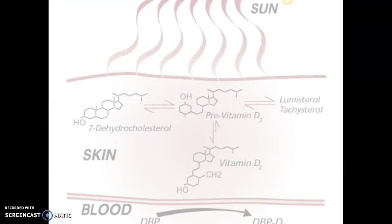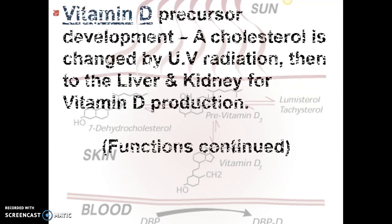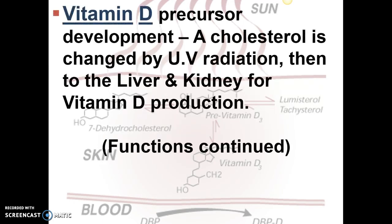This diagram shows how sunlight — the ultraviolet B rays — changes a precursor in our skin from cholesterol to form vitamin D, with the help of your liver and your kidney. The vitamin D precursor is formed when ultraviolet radiation changes the cholesterol in the superficial capillaries, and it is then moved to the liver and kidney through the blood system.